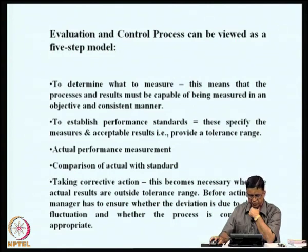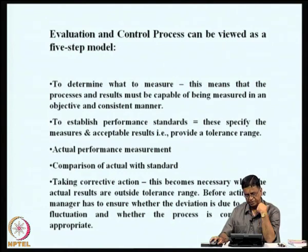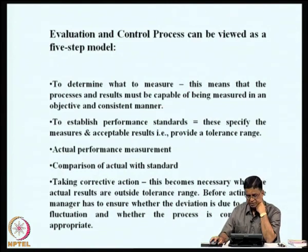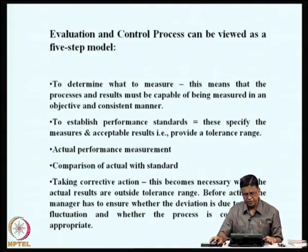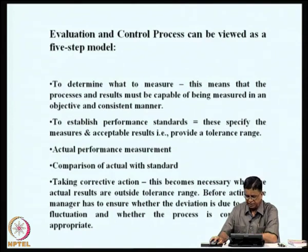We said it can be viewed as a five-step model. The first step is to determine what to measure. The second step is to establish performance standards — that is where you give a tolerance range. The third one is the actual performance measurement. Then comparison of the actual with the standard becomes the fourth step. The fifth step is taking corrective action, which becomes necessary when actual results are outside the tolerance range.